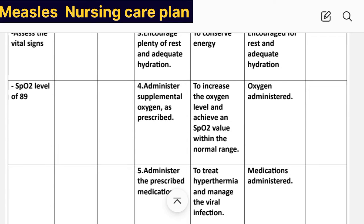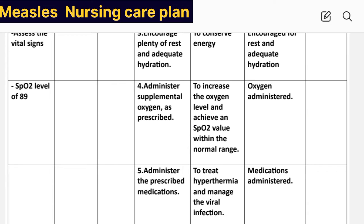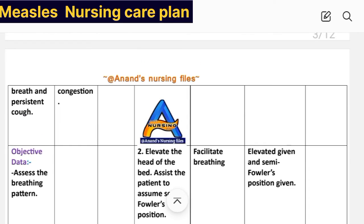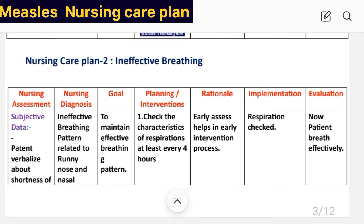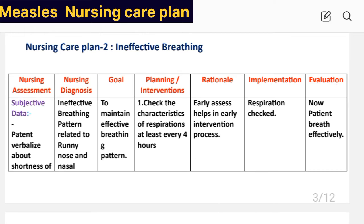Intervention number four: administer supplemental oxygen as prescribed to increase the oxygen level and achieve an oxygen saturation value within the normal range. Implementation: oxygen administered. Intervention number five: administer the prescribed medication as required to treat hyperthermia and manage the viral infection. Implementation: medication administered. Evaluation: patient now breathes effectively. This completes care plan number two.